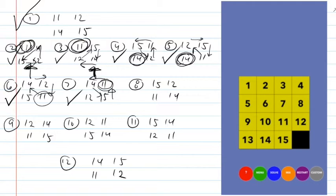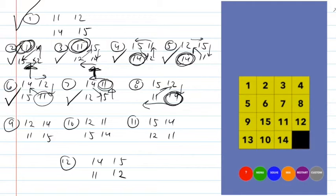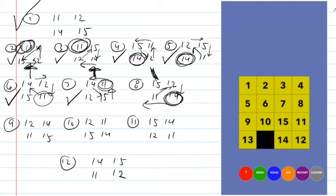In case eight, neither the eleven nor the fourteen is in the right spot, but the fourteen is on the right-hand edge. I can easily get the fourteen to its proper spot by moving the fifteen over and cycling these three tiles around. Now the fourteen is in its right spot, and this has turned into case four.